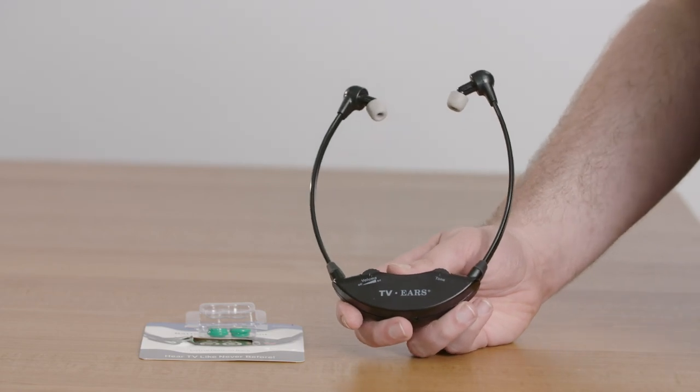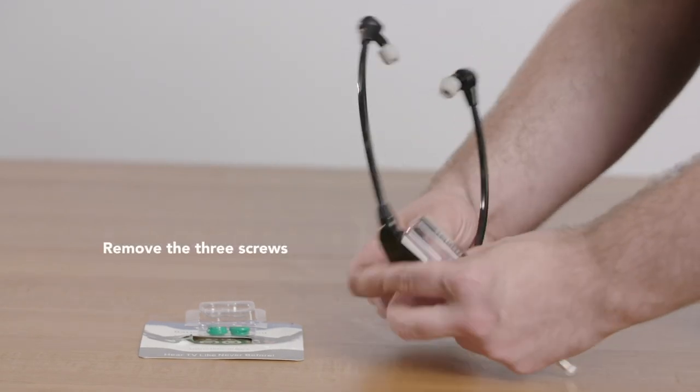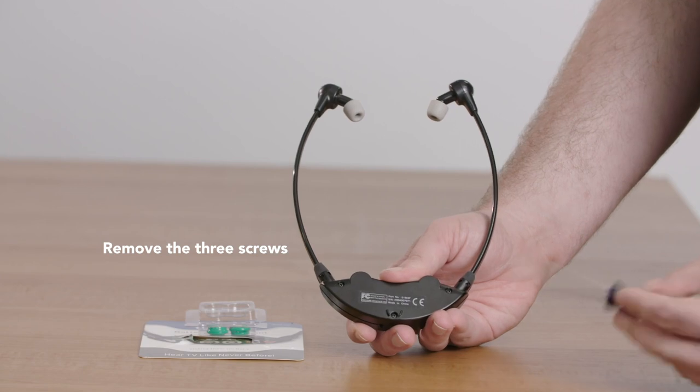To exchange the battery inside the headset, the first thing we'll do is take the screws out of the back of it. You can see there are three screws here.